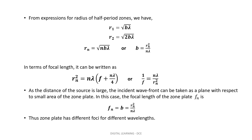The focal length of a zone plate can be calculated using the radius of the half period zones. The first half period zone has radius r1 = √(bλ), the second r2 = √(2bλ), and so on. The nth zone has radius rn = √(nbλ), or rn² = nbλ. In terms of focal length, rn² = nλf + nλ/4f, giving 1/f = nλ/rn², or f = rn² / (nλ), which is also equal to b. Hence, the zone plate has different foci for different wavelengths.